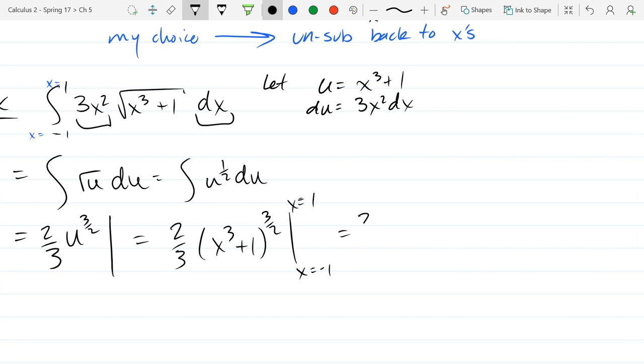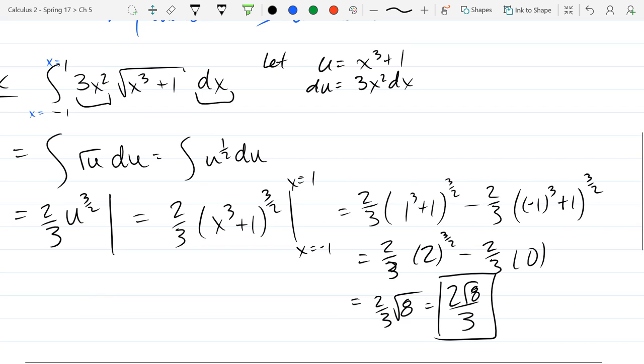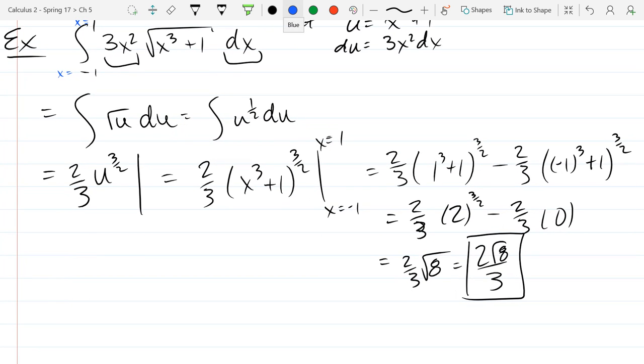So plug in the top point first. And then the bottom one we're going to subtract when we plug this in. So 1 plus 1 is 2. 2 to the 3 halves minus 2 thirds times 0. So 2 cubed is 8. And 1 half is the square root. So we can write it as 2 squared 8 over 3.